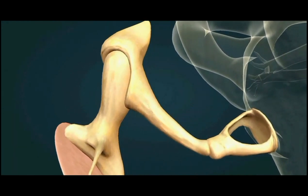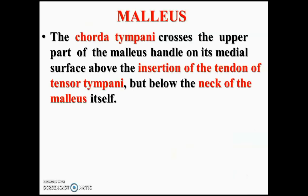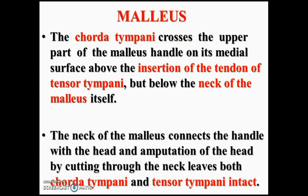The chorda tympani nerve lies medial to the handle of the malleus, just above the insertion of tensor tympani and below the neck, running between the fibrous and mucous layers. The head of the malleus can be amputated without damaging the chorda tympani and tensor tympani because they lie below the neck.